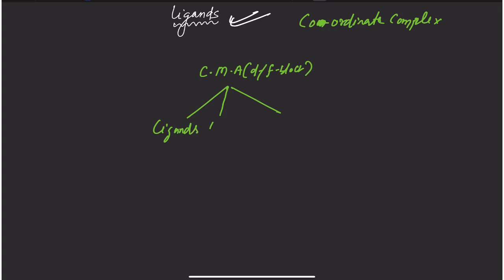Ligands are species capable of donating electrons. Where do we give electrons? To the central metal atom. The ligands donate either a lone pair or carry a negative charge, and the electrons are transferred to the central metal atom.